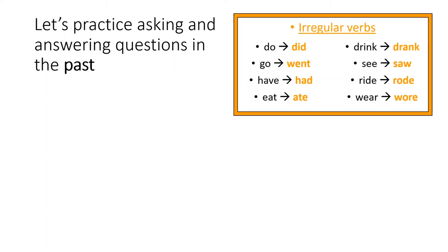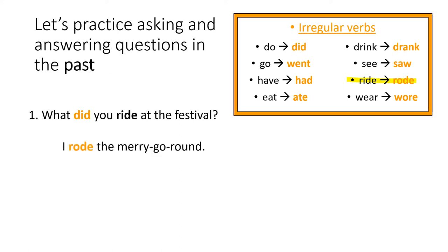Now it's time to practice asking and answering questions in the past. If you need help, here's a list of your irregular verbs. Number one says, what did you ride at the festival? Remember, we need to have ride in the past. Here it says ride in the past is rode. So, I rode the merry-go-round. We just changed ride to rode.